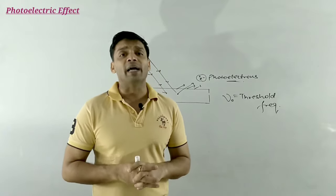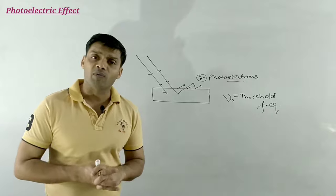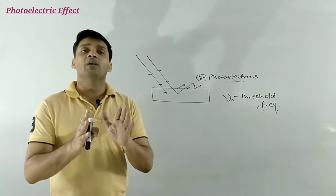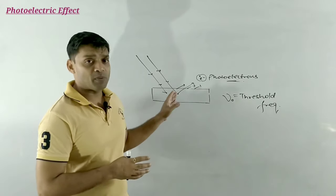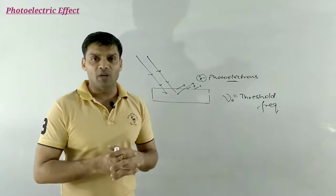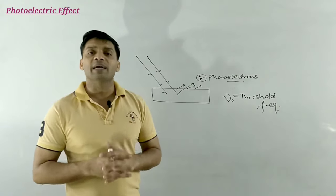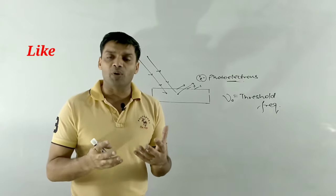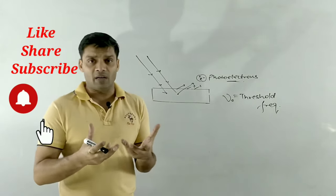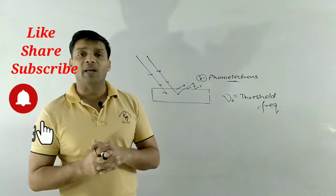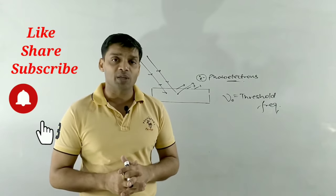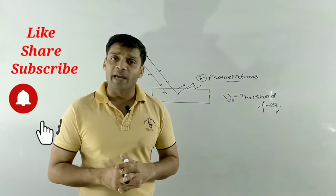These are the three very important observations of the photoelectric effect. The explanation to these observations was given by Planck — this was another failure of the classical wave theory, as it was unsuccessful in explaining the photoelectric effect. Later, a scientist named Planck gave us Planck's quantum theory, with the help of which phenomena like black body radiation and the photoelectric effect were justified. The detailed explanation using Planck's quantum theory will be covered in our next video session. Thank you and have a nice day.